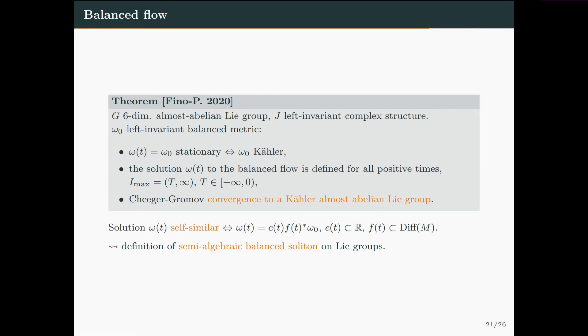And so the theorem we obtain is that if we have a six-dimensional almost abelian Lie group, endowed with a left-invariant complex structure, and we assume omega_0 to be a left-invariant balanced metric, then omega_0 is a stationary solution of the balanced flow if and only if it is Kahler. Then we prove that the solution of the balanced flow is defined for all times. And then we have a trichotomy of convergence to a Kahler almost abelian Lie group, when t goes to infinity.